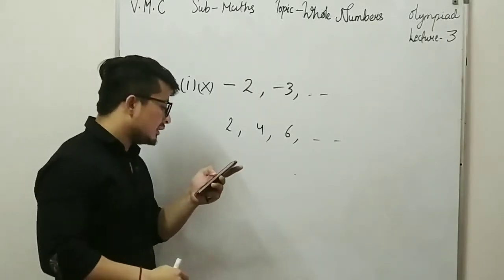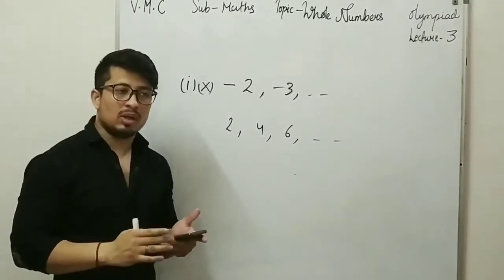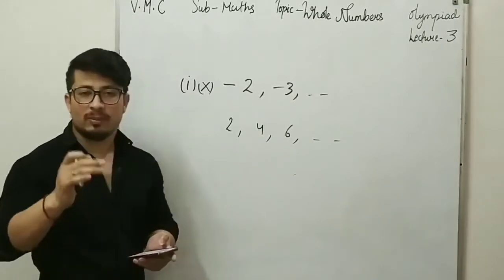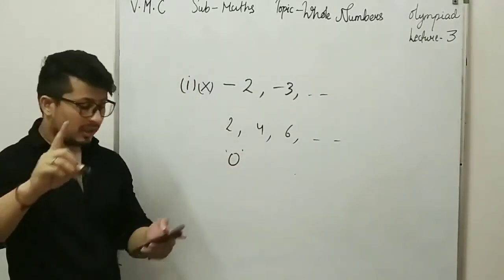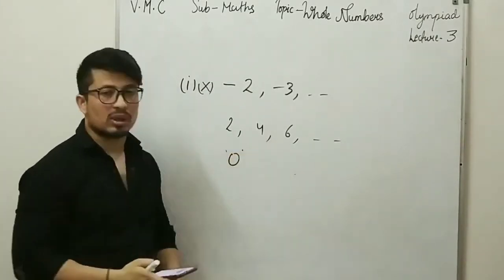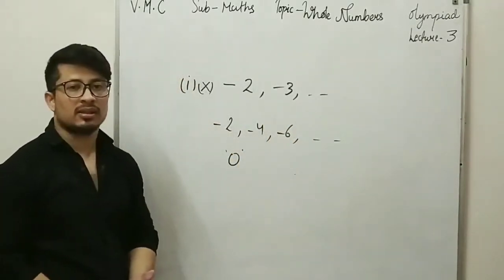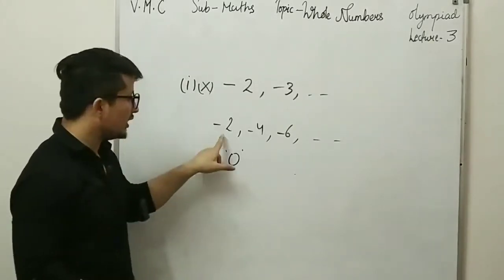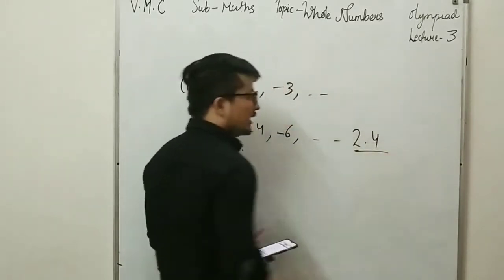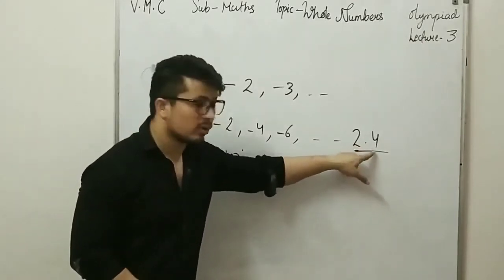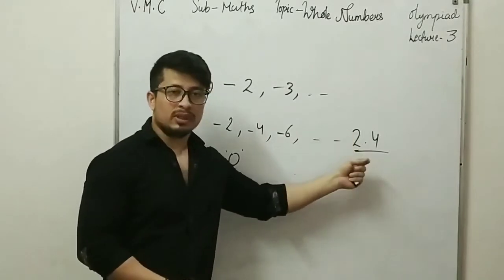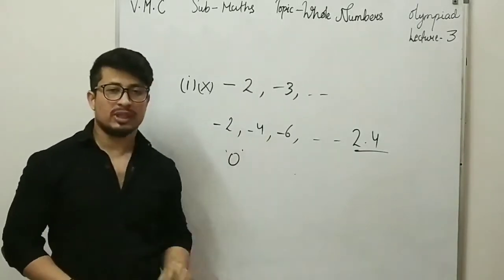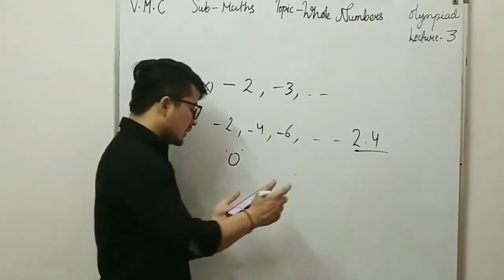Let's consider the third option: the result will be an integer. But integers can be negative, while whole numbers are not negative, so option C is not conclusive. The last option is the result will be zero. Zero is a proper whole number, and in even numbers all numbers are divisible by two — but 2.4 is also even yet not a whole number. So the most suitable option is zero. Option D is correct.